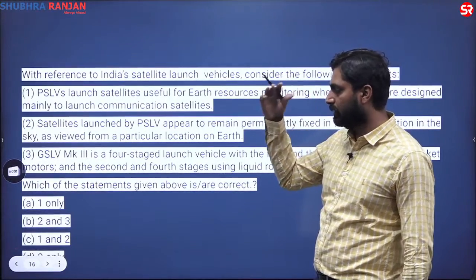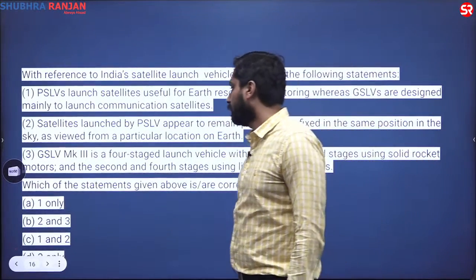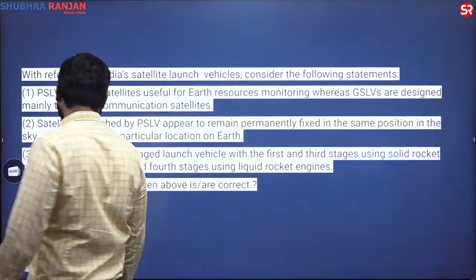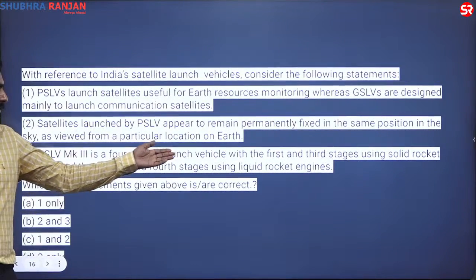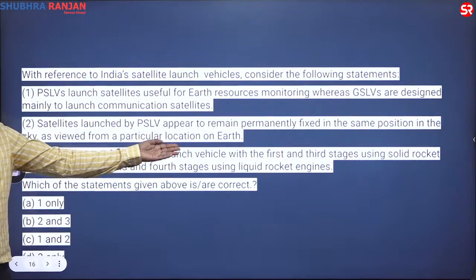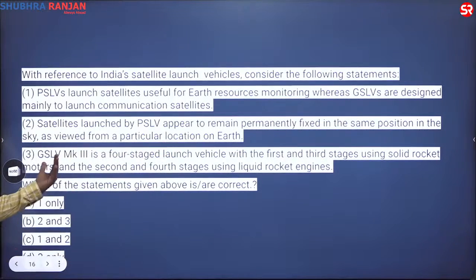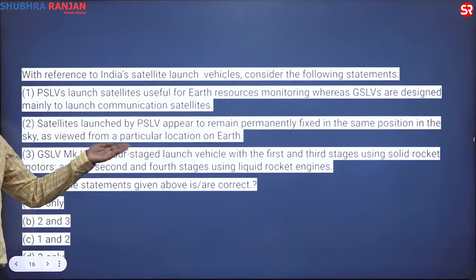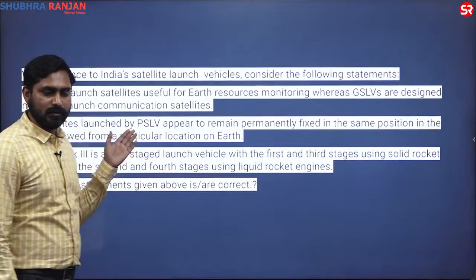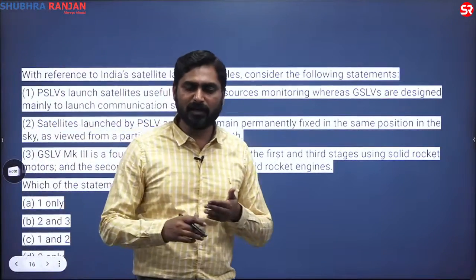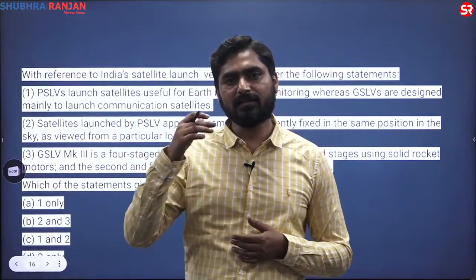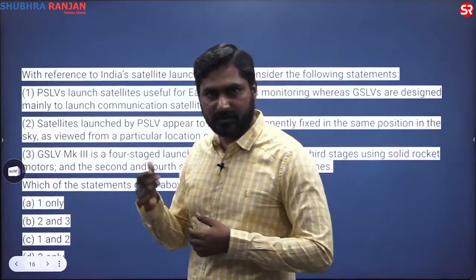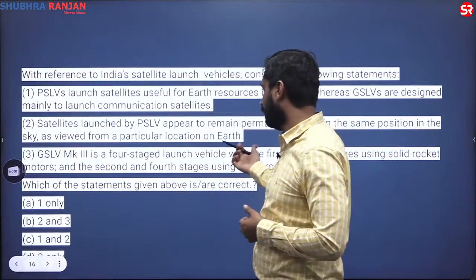Let us say you do not know this statement. If you focus on the third statement: GSLV Mk 3 is a four-stage launch vehicle with the first and third stages using solid rocket motors and the second and fourth stages using liquid rocket engines. This is a wrong statement because GSLV uses three stages, and the upper stage is known as the cryogenic upper stage.